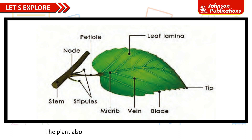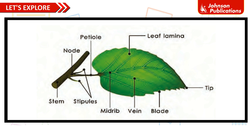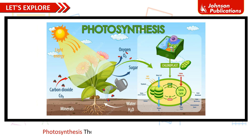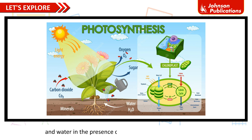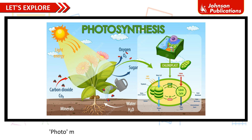The plant also stores part of this glucose in the form of starch. The stem of the cactus plant contains chlorophyll. Photosynthesis: the process of making food from carbon dioxide and water in the presence of sunlight is called photosynthesis. Photo means light and synthesis means putting together.